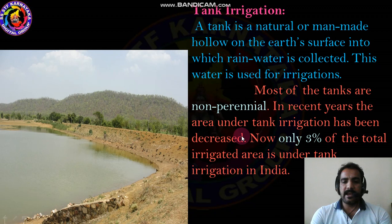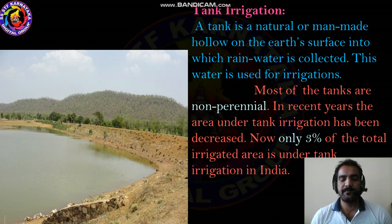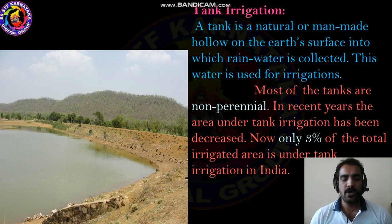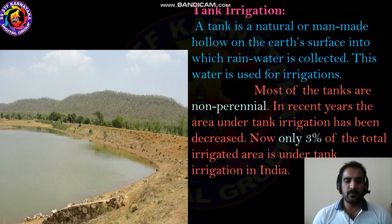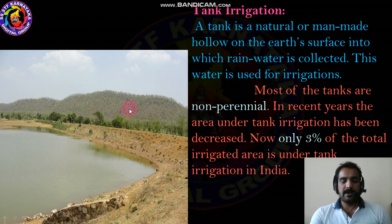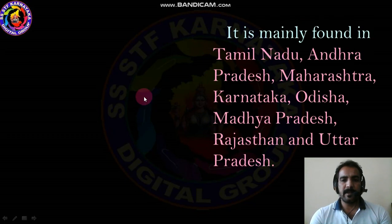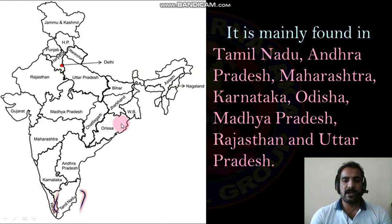The area under tank irrigation has decreased and now covers only around 3% of total irrigated area. This is due to uneven rainfall and encroachment of tanks. Even today, some states maintain tank irrigation. It is mainly found in Tamil Nadu, Andhra Pradesh, Maharashtra, Karnataka, Orissa, Madhya Pradesh, Rajasthan, and Uttar Pradesh.